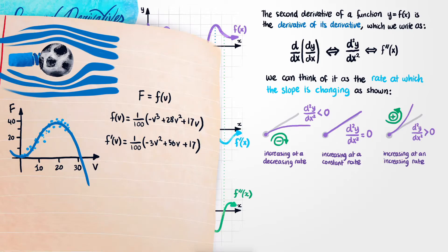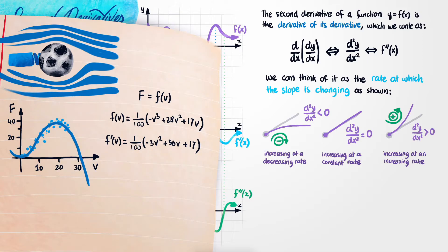The derivative of 1/100 times (minus v cubed plus 28v squared plus 17v) is the same thing as 1/100 times (minus 3v squared plus 56v plus 17). If we want the derivative of the derivative, we should just differentiate the derivative again.